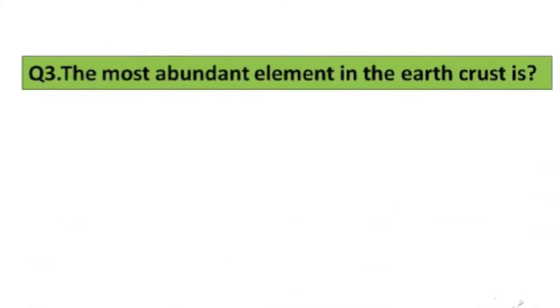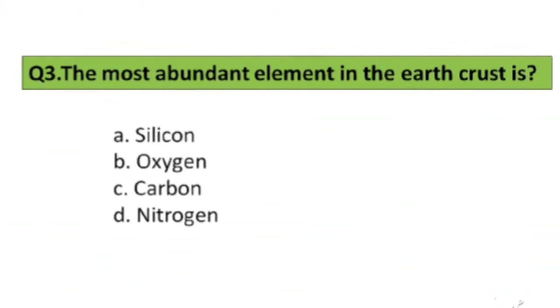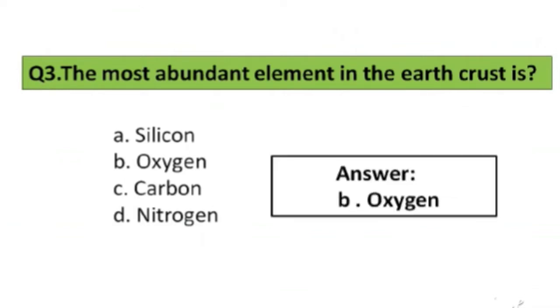Question number 3. The most abundant element in the earth's crust is: A. Silicon, B. Oxygen, C. Carbon, D. Nitrogen. The right answer is option B, Oxygen.